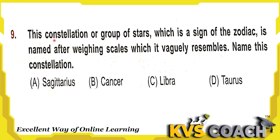Next question: this constellation or group of stars, which is a sign of the zodiac, is named after a weighing scale which it vaguely resembles — name this constellation. Option A is Sagittarius — the ninth astronomical sign, referencing the Greek hero of the Trojan War in archery. Option B is Cancer — it represents a crab. Option C is Libra — yes, this represents a weighing scale. Option D is Taurus — which represents a bull. So the right answer is Libra.